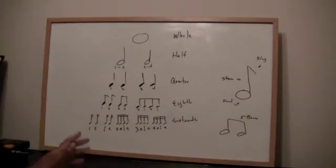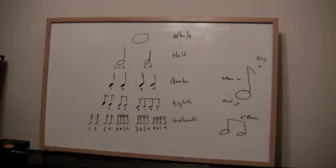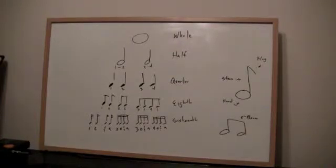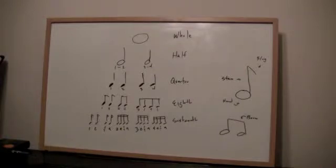The metronome is now counting quarter notes. If I were to hold a whole note for four counts, it would sound like this: one, two, three, four — off. That was four counts. A half note — two counts each — would sound like this: one, two, three, four.